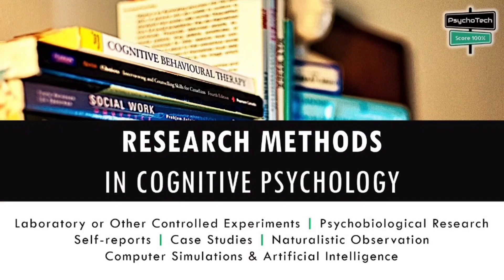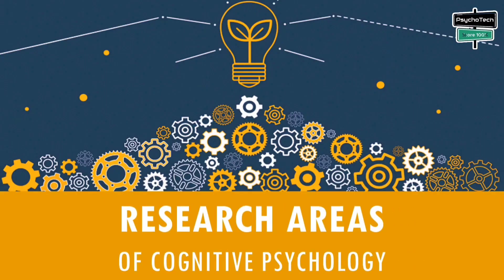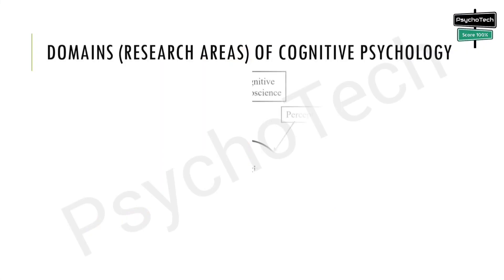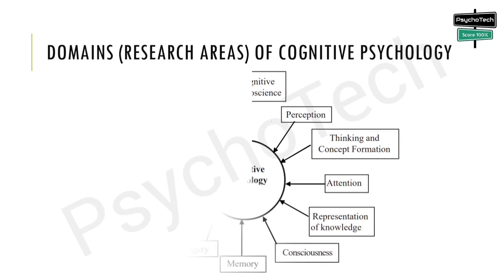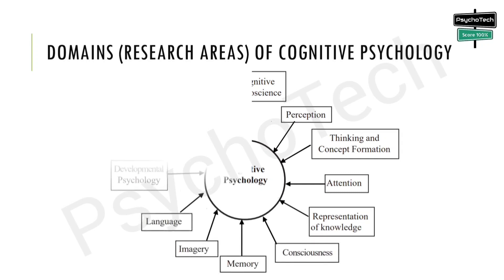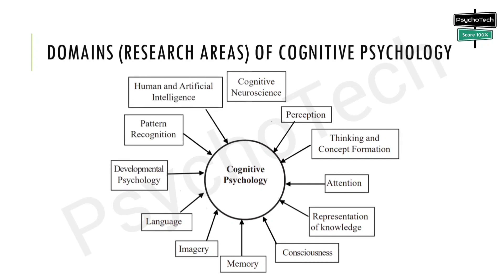In the last video we discussed about research methods in cognitive psychology. In this video we are going to discuss about the research areas of cognitive psychology. In cognitive psychology we have many domains of research, like cognitive neuroscience, perception, thinking and concept formation, attention, representation of knowledge, consciousness, memory, imagery, language, developmental psychology, pattern recognition, and human and artificial intelligence.